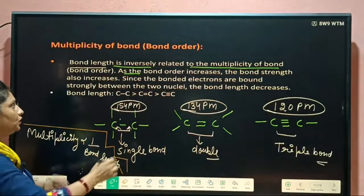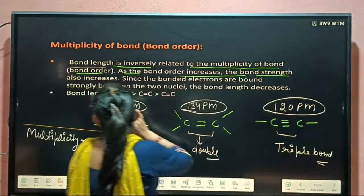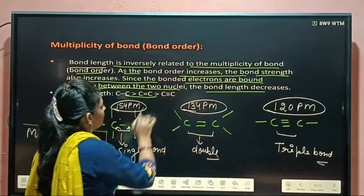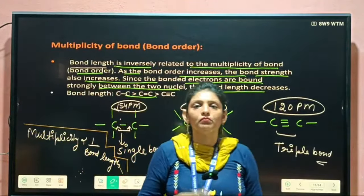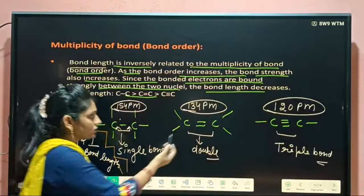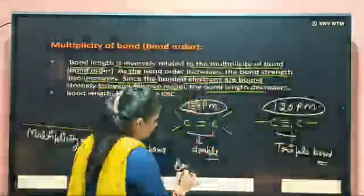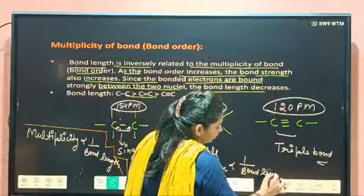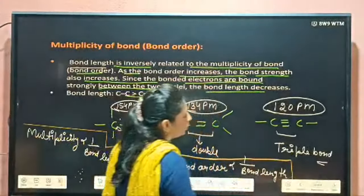The next factor is bond order. As bond strength also increases, since the bonded electrons are bound more strongly between the two nuclei, the bond length decreases. Bond order means the number of bonds between two bonded atoms. Here bond order is one for a single bond, and two for a double bond. If bond order increases, then bond length decreases — bond length is inversely proportional to bond order.